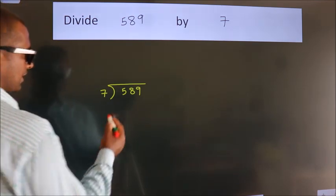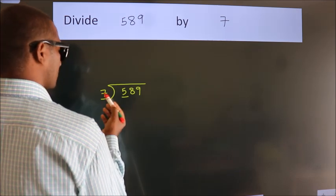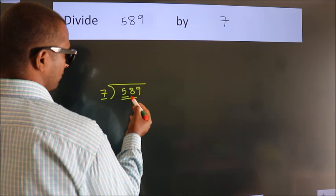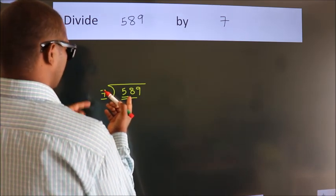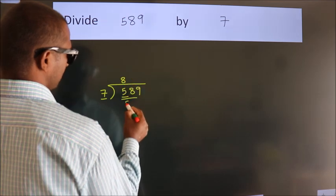Next. Here we have 5, and here 7. 5 is smaller than 7, so we should take 2 numbers: 58. A number close to 58 in the 7 table is 7 times 8, which is 56.